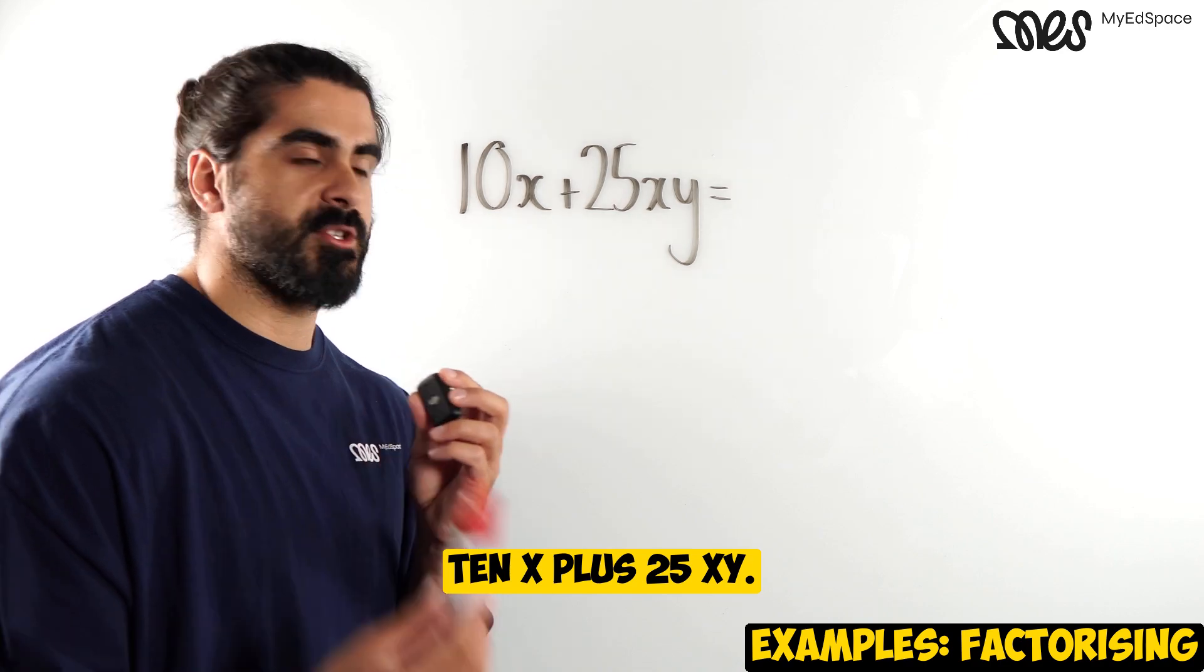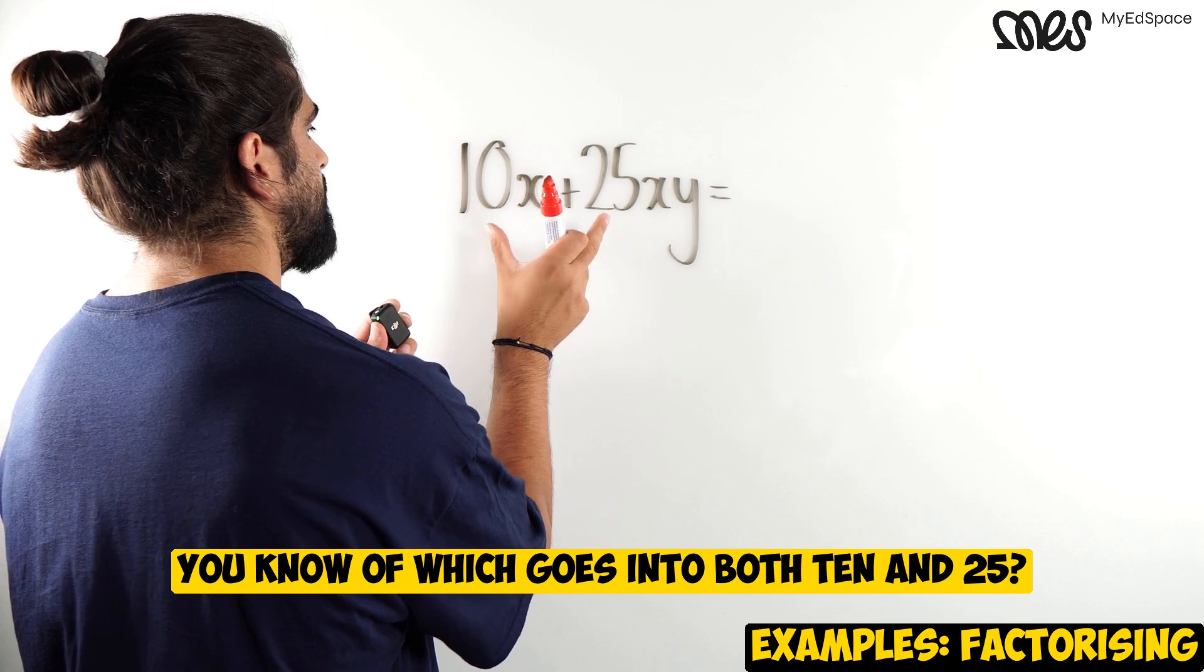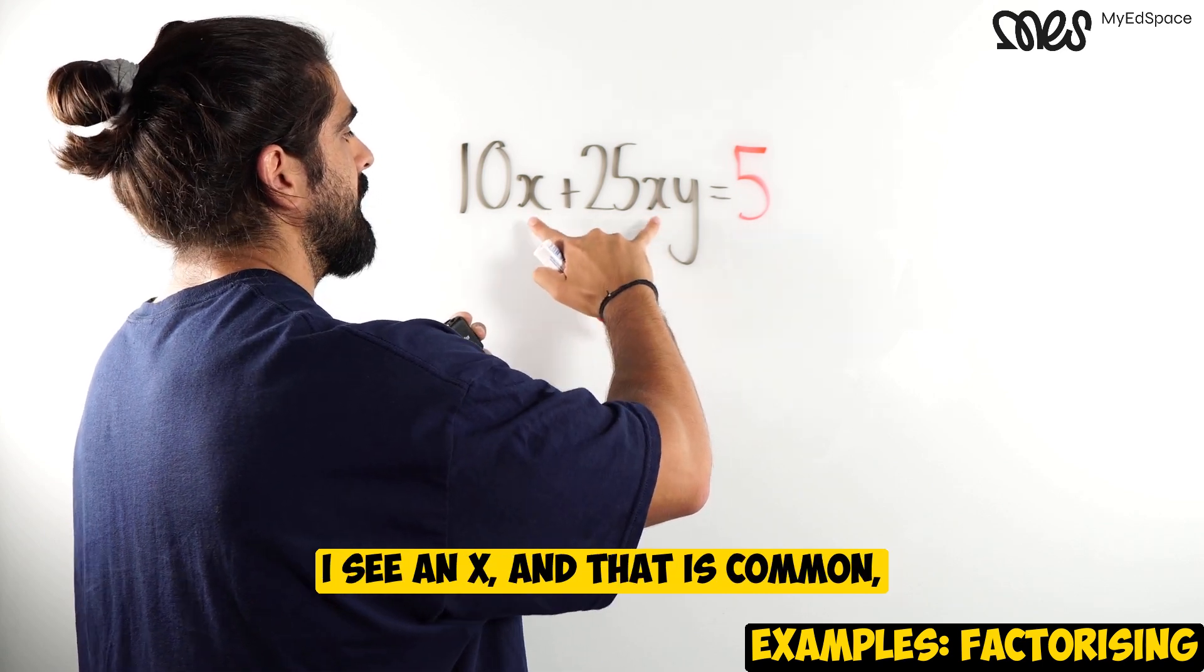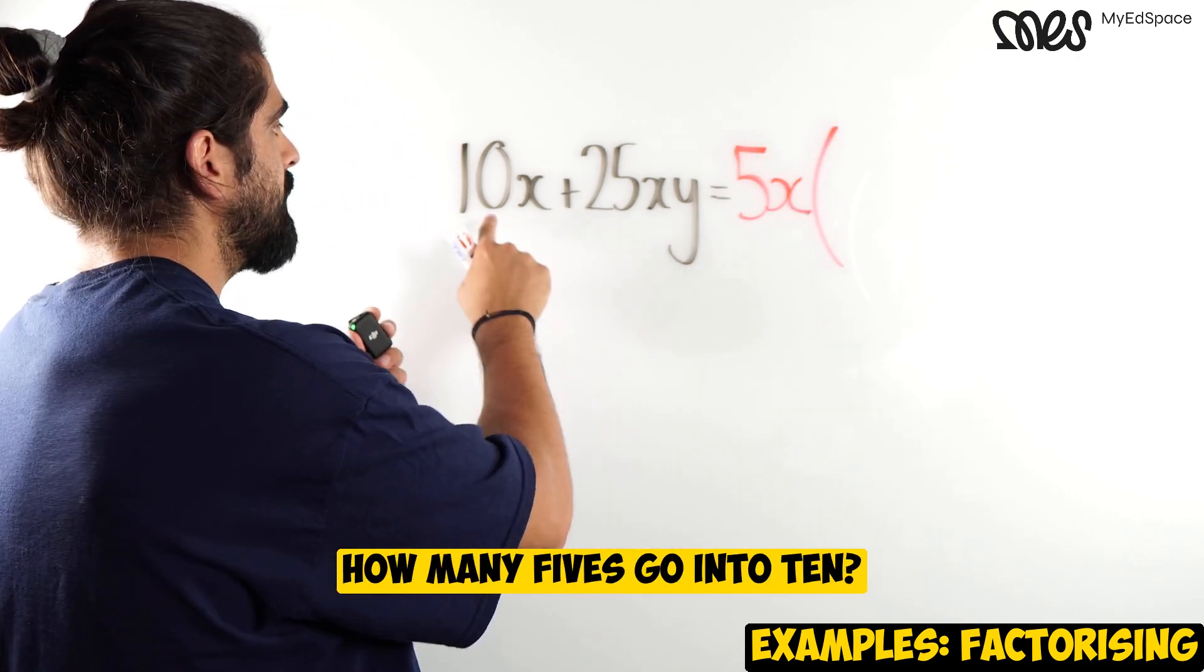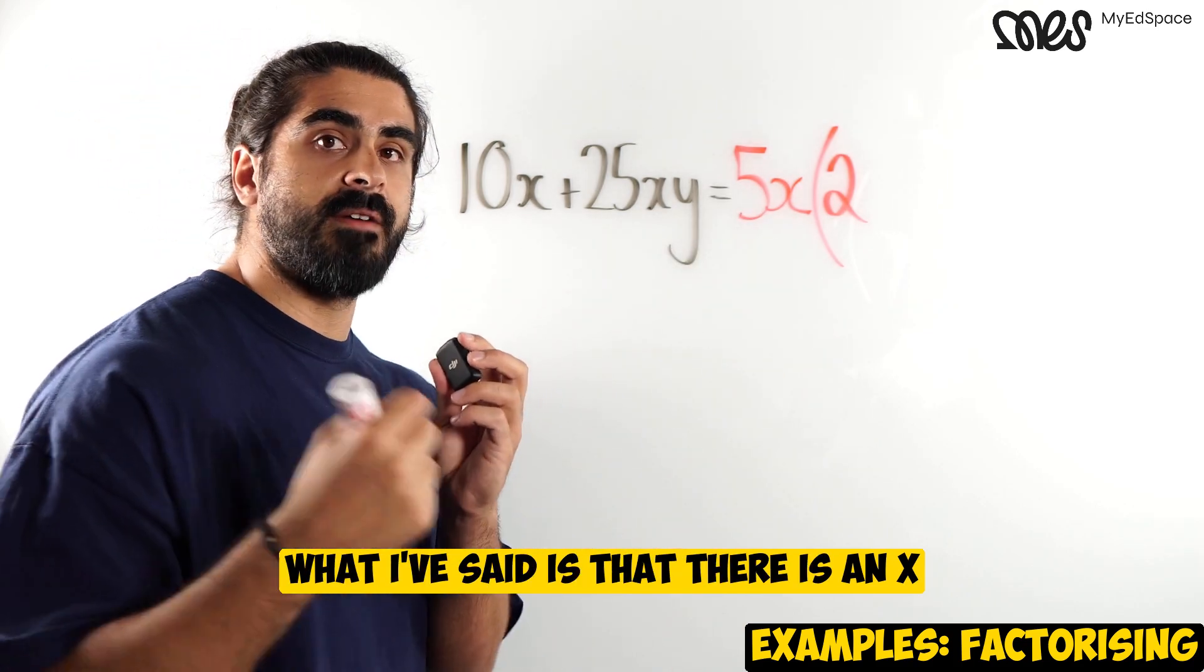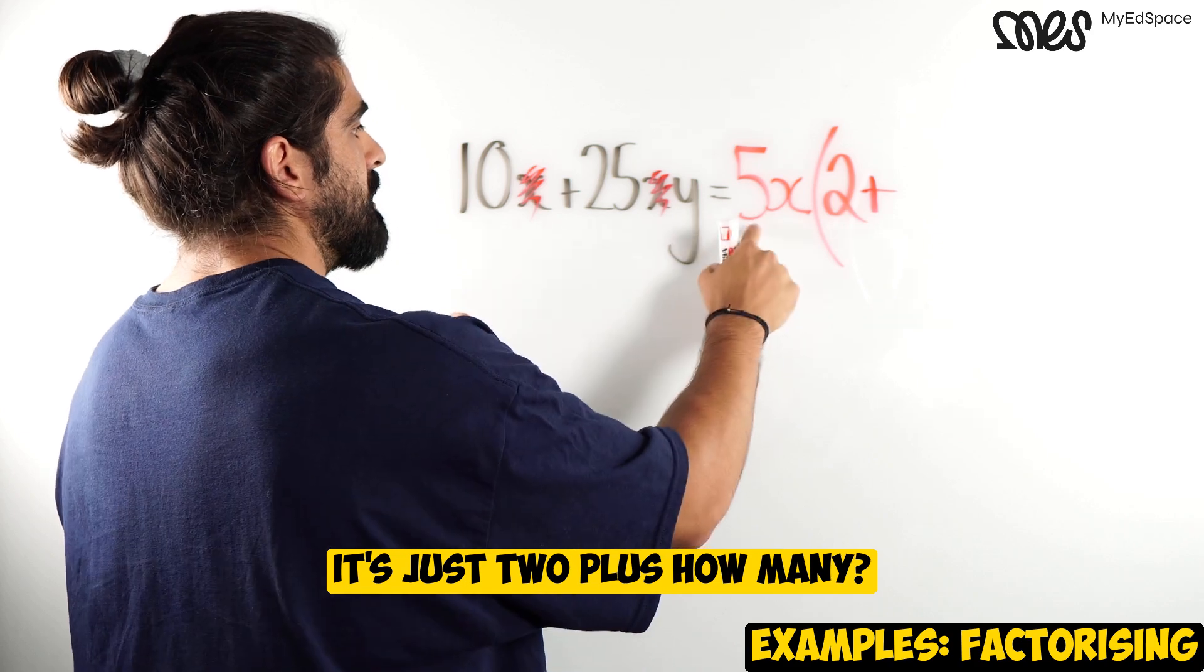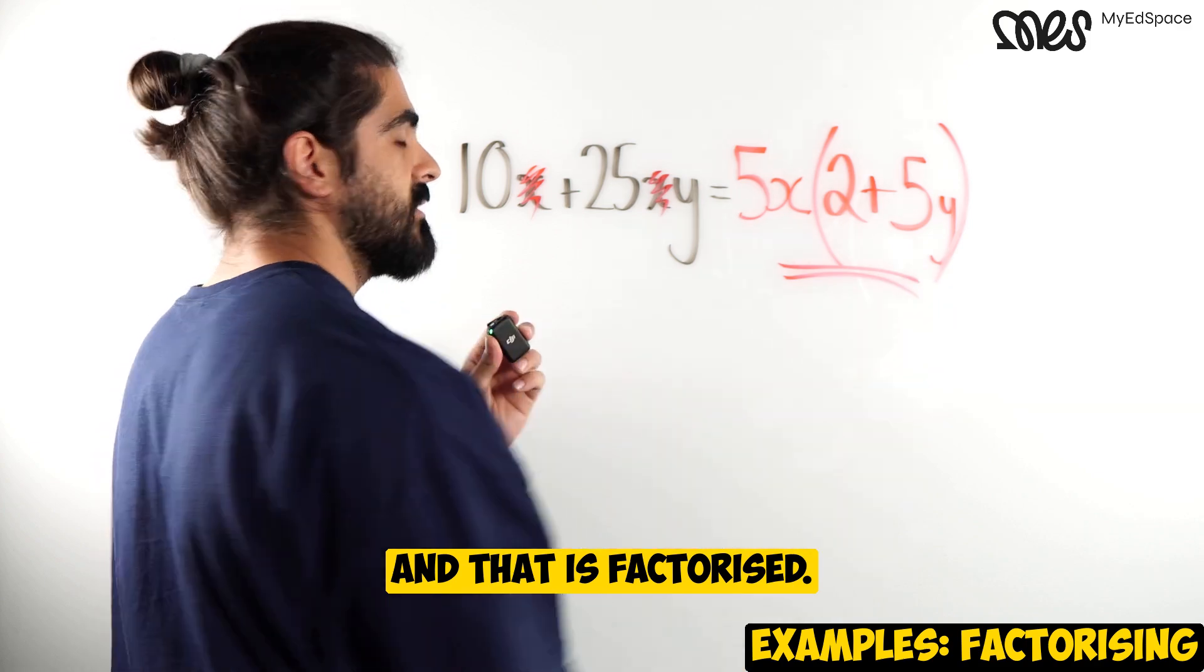10x plus 25xy. So the first thing we're going to do, look at the numbers. What number or what's the largest number that you know of, which goes into both 10 and 25? The answer is 5. Then we're going to look at the letters in both terms. What letter do you see in both? I see an x and that is common. So I can take it out of the bracket. Let's open my bracket now. How many 5s go into 10? The answer is 2. Don't forget, I factorized out an x. What I've said is that there is an x in both terms and you essentially cross them out. So we're left with no x's left. It's just 2. Plus, how many 5s go into 25? The answer is 5. And then there's still that y left. And that is factorized.